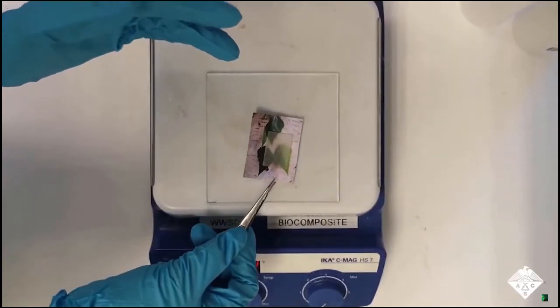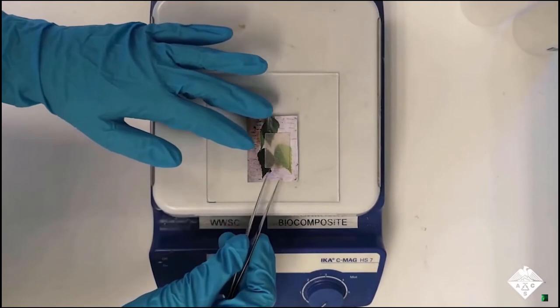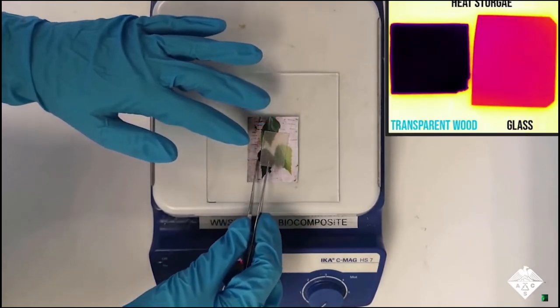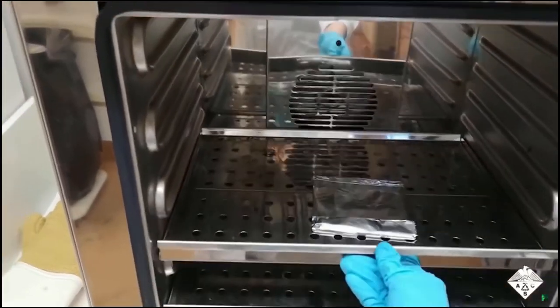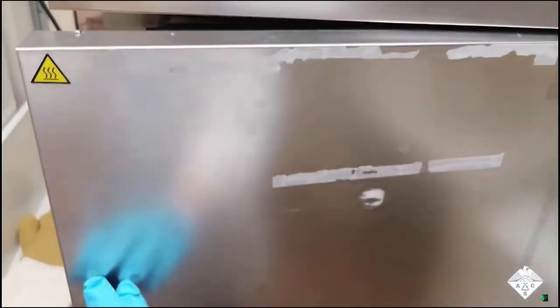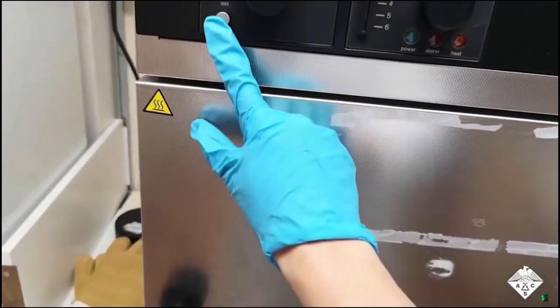PEG is known as a phase-changing material, meaning it can store energy when melted and release energy upon solidifying. Finally, the treated wood was heated in an oven, resulting in a strong, transparent, and biodegradable material.